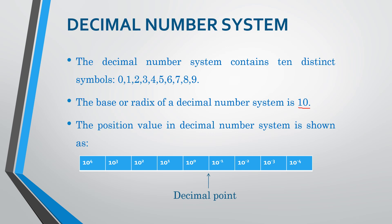Position value in decimal number system is like this — yeh humara decimal point hain. Iske right side mein fraction numbers ki position value 10 ki negative powers mein increase kerti hain. Aur left side mein jitnay integer part hotey hain, uski position value 10 ki positive powers mein increase kerti hain.